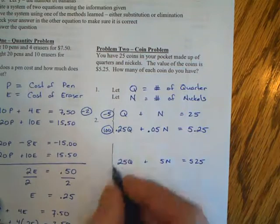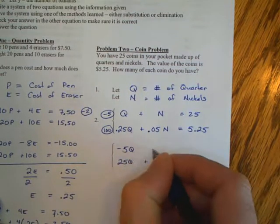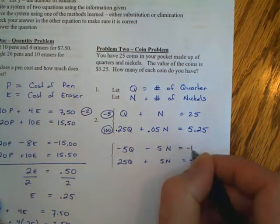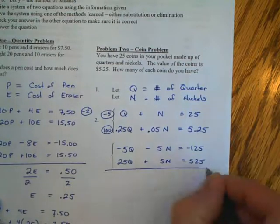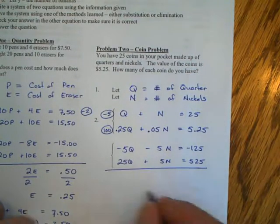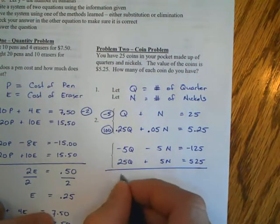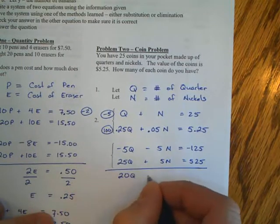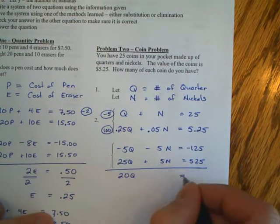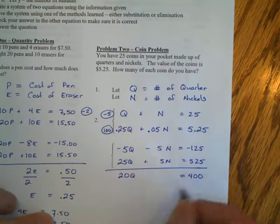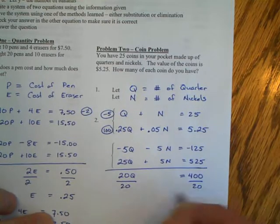As I consider the top equation, I want to drop out my N's. So comparing 1N versus 5N, I'm going to multiply the top equation by negative 5. Remember to multiply all three of them by negative 5. That gives me -5Q, -5N equals -125.